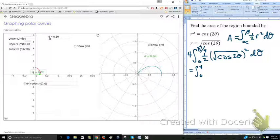So the 1 half and the 4 will leave us with a 2 out front, and we have the integral of cosine. We'll get a small error there. That should be pi over 4, cosine of 2 theta d theta.